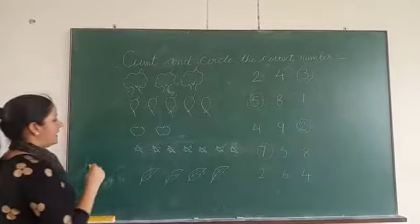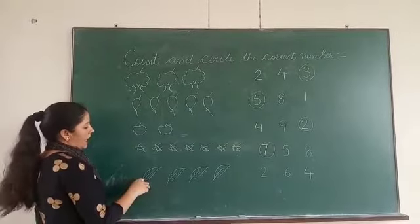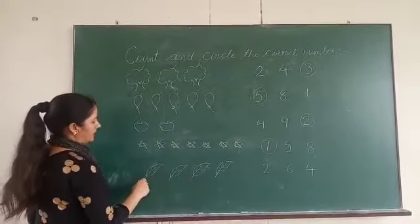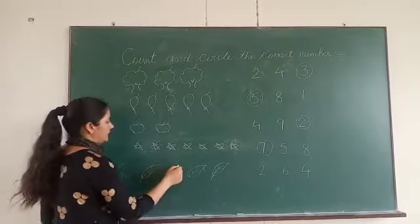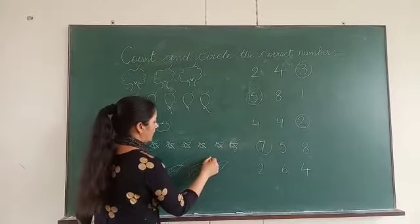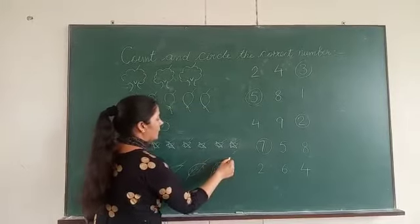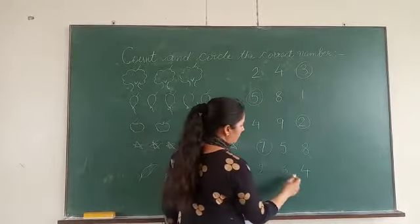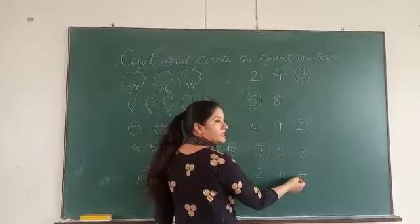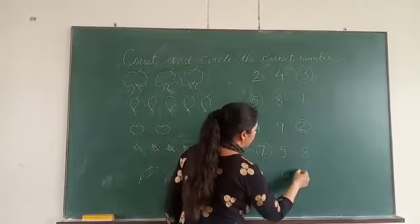Next, how many leaves are here? Count them. One, two, three, four. Yes, four. Here is four. Circle it.